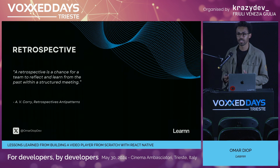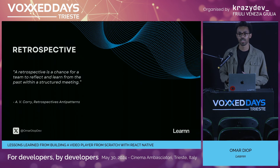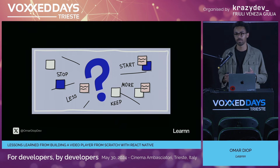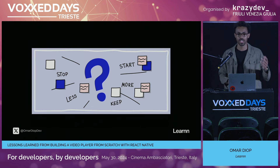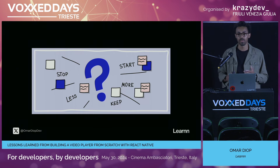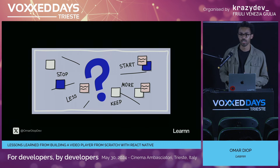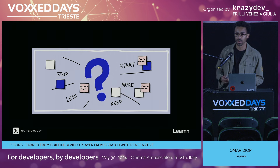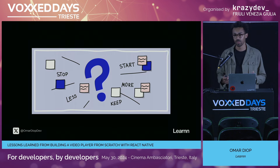More concretely, a retrospective is a chance for a team to look back and reflect on past work in a structured meeting. The goal of this talk is to reflect on the things we've done on this particular project — take the good things, acknowledge the things we had to face, and state some lessons learned. My goal is to share our experiences to hopefully prevent some errors and save you time if you're developing a React Native app with video functionality.